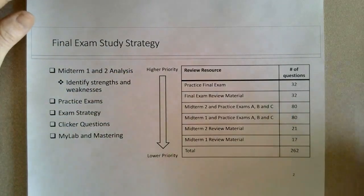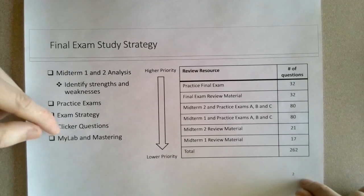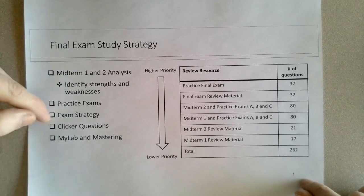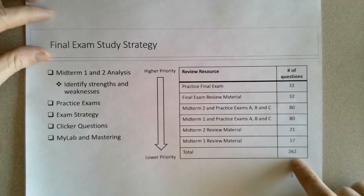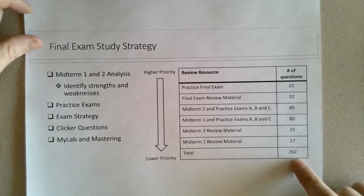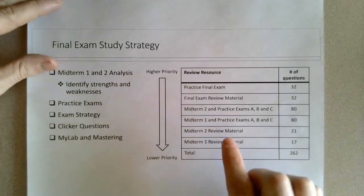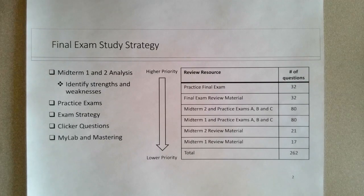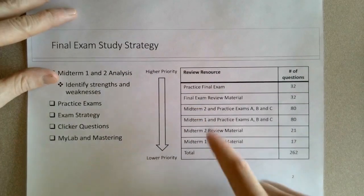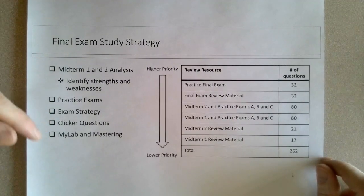If you're comfortable with all of this material, I would then begin to look at clicker questions — particularly the ones labelled as exam-style questions, which are definitely very valid. And then after that, the MyLab or Mastering homeworks and practice assignments. So in addition to the 250-plus questions, there's obviously a vast number of questions in MyLab or Mastering. I prioritize the actual midterm questions because you can see the kind of questions that have actually been asked and processed by your instructors — so they get highest priority, and you work down to things assigned with lower stakes like the clicker questions.